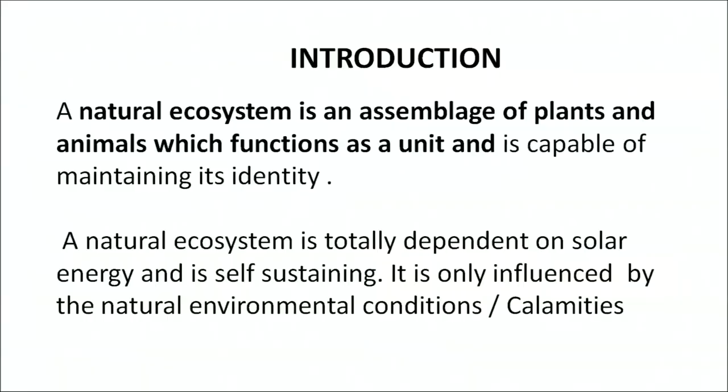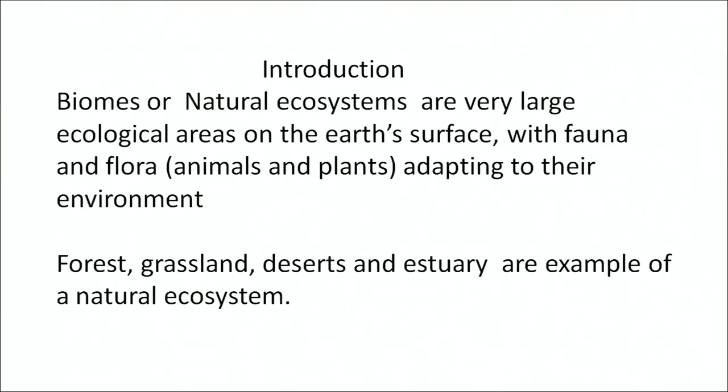Thank you Neelam. Today I am going to discuss with you about the natural ecosystems. A natural ecosystem is an assemblage of plants and animals which function as a unit and is capable of maintaining its identity. A natural ecosystem is totally dependent on solar energy and is self-sustaining. It is only influenced by natural environmental conditions or calamities. Biomes or natural ecosystems are very large ecological areas on the earth's surface with fauna and flora — that is the animals and plants — adapted to that environment. Forests, grasslands, deserts, and estuary are examples of natural ecosystems.